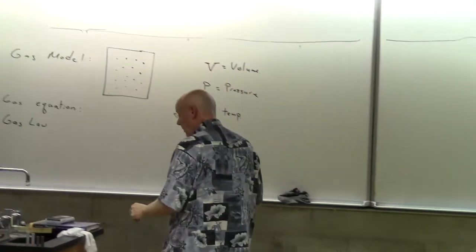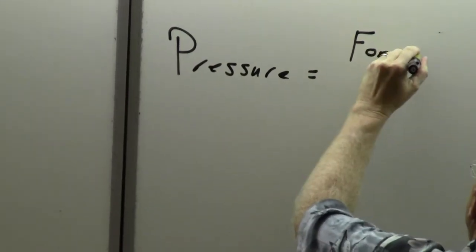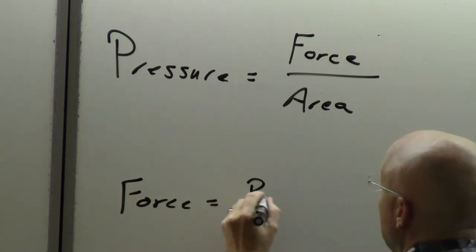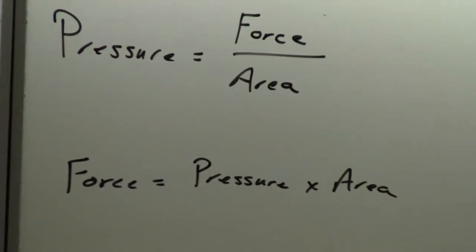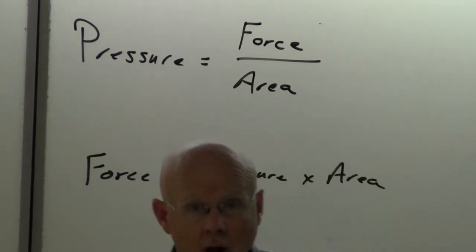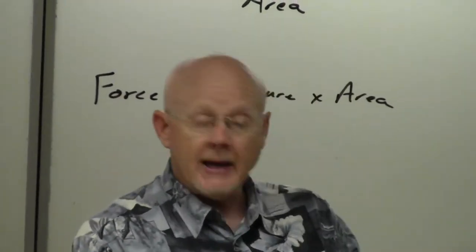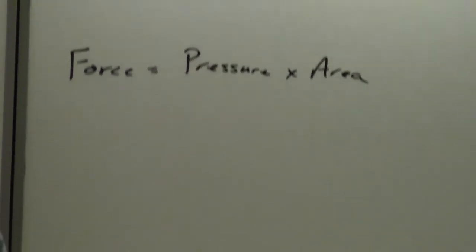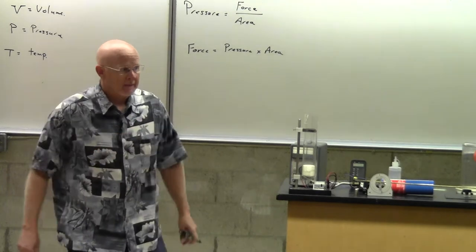It's the force of impact of those BBs that is creating the pressure. In other words, pressure — let me just define pressure — pressure is force per area. I like to use the phrase that these BBs, or these molecules, are really, really small, but they're going really, really fast, and there's lots of them. So I call them the mighty midgets.